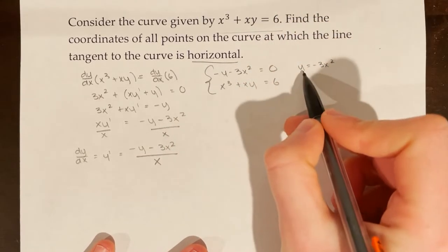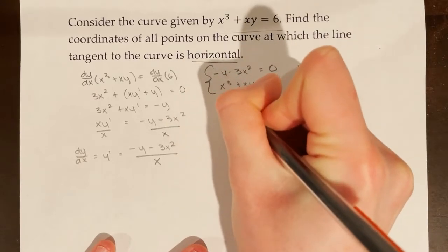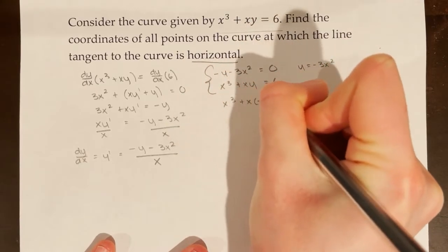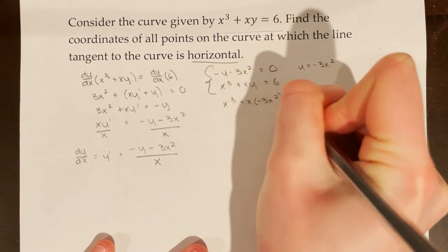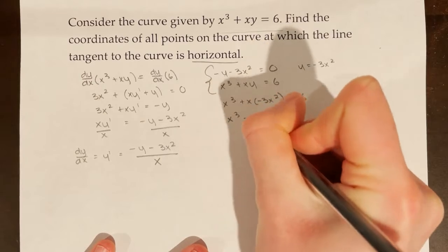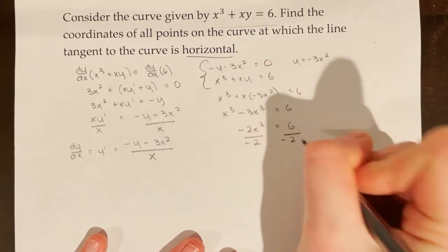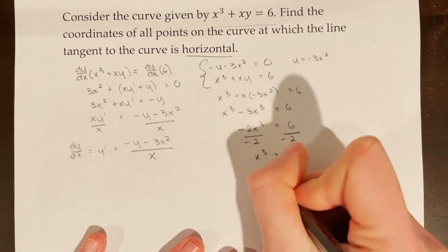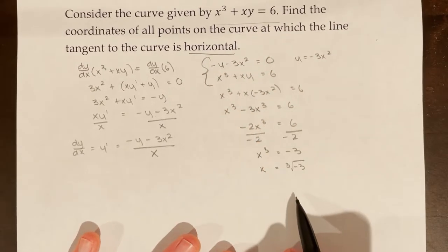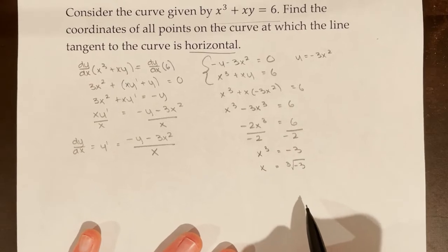I'll isolate y in the first equation: y = -3x². Then I plug this into the second equation: x³ + x(-3x²) = 6. Solving this gives x equal to the cube root of negative 3.